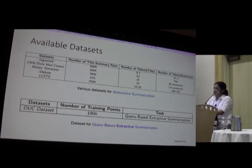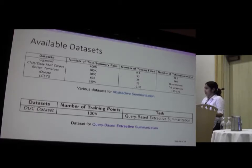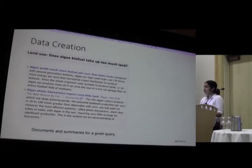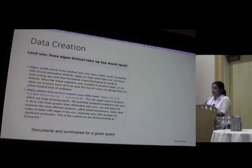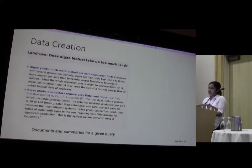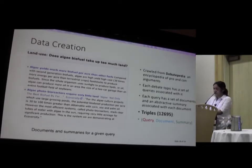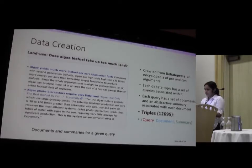The other problem we came across was that for query based abstractive summarization there were no significant datasets. There are many datasets for abstractive summarization and one for query based extractive summarization, but nothing for abstractive summarization in the context of a query. So we created a new dataset by crawling the DebatePDF website, which has around 663 debates listed in 53 categories, each with some arguments and questions attached. For example, one debate has the query 'Does algae biofuel take up too much land?' — the documents are the points, and the blue highlighted text is taken as the summary. We extracted around 12,695 points from this dataset and split it 80/10/10 percent, doing 10-fold cross validation.